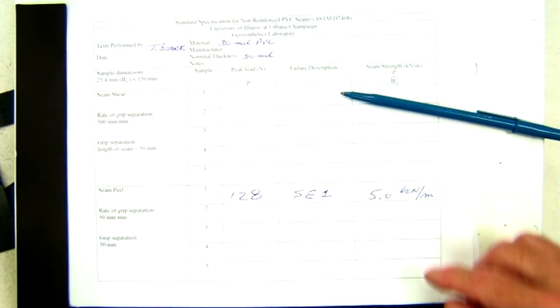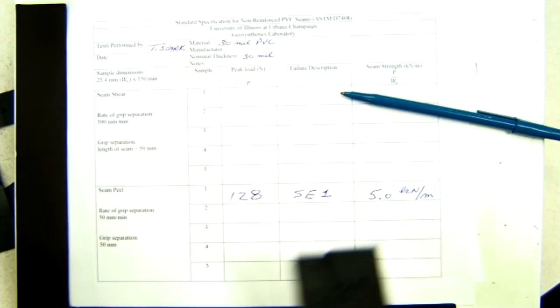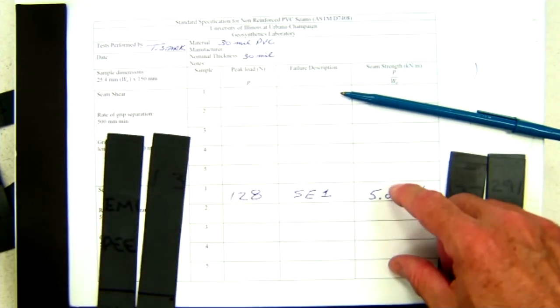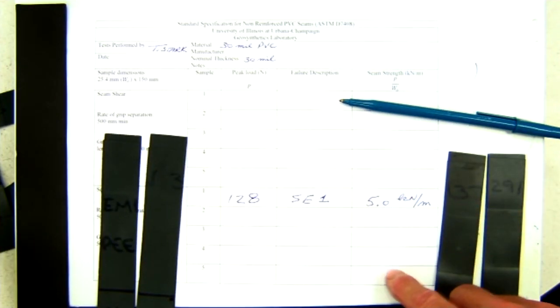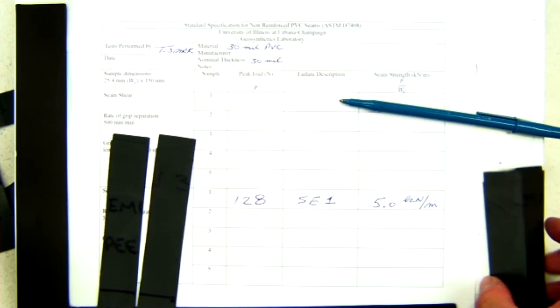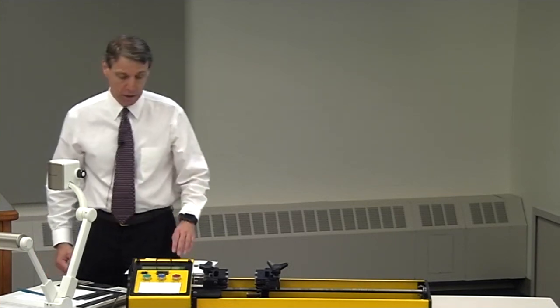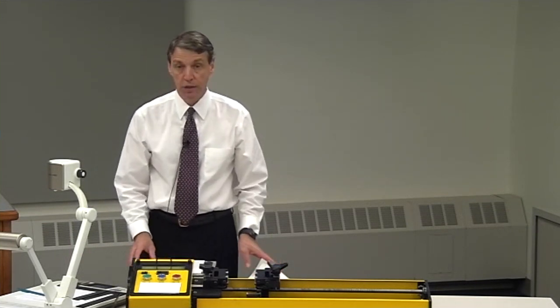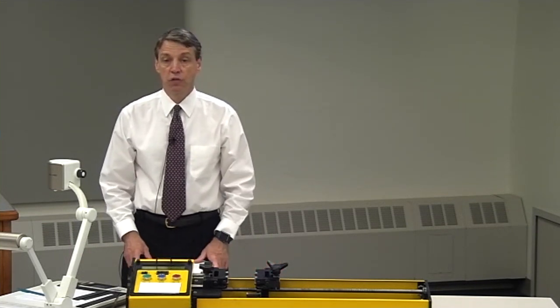This test would be repeated four more times with these other four seams. And the average of those five seam strengths would be the reported peel strength value. That peel strength value would be compared to the project specifications to see if the seam met the project requirements. That completes the peel strength test of an unreinforced PVC geomembrane seam.